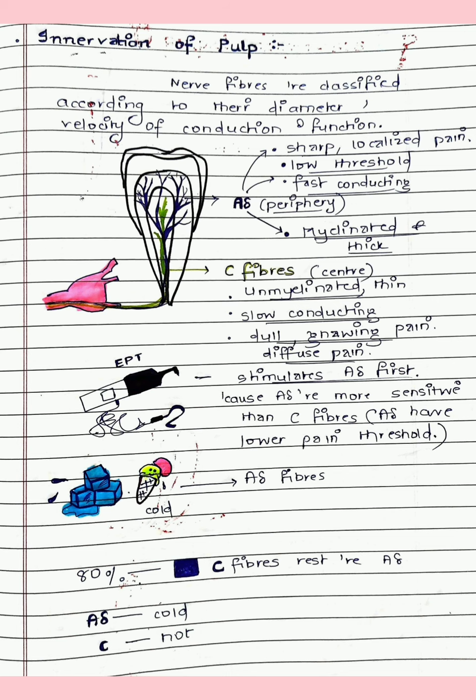Because the pulp lacks proprioception, it is difficult to localize the pain — one cannot easily point out the tooth that is aching. When using the electric pulp test, it stimulates the A-delta fibers first since they have a low pain threshold and are more sensitive. There are about 80% C fibers and the rest are A-delta fibers. A-delta fibers are more responsive to cold and C fibers are more responsive to heat.